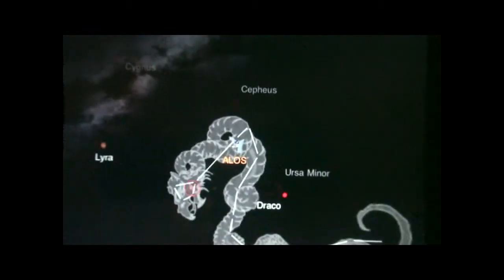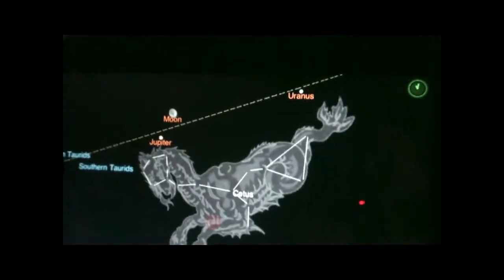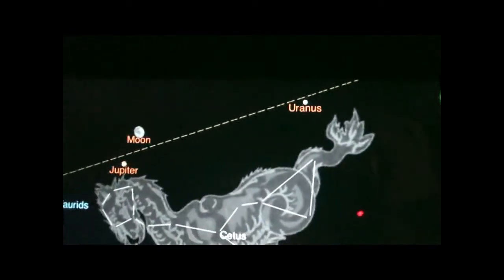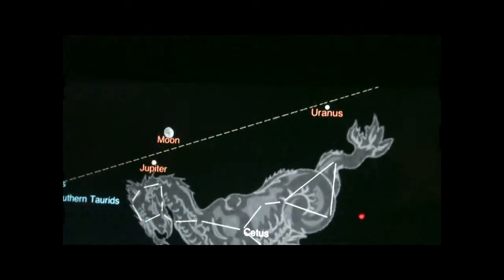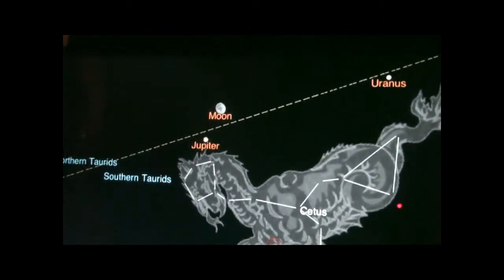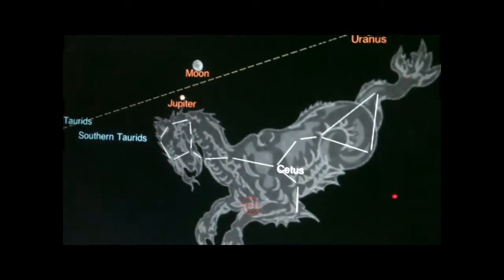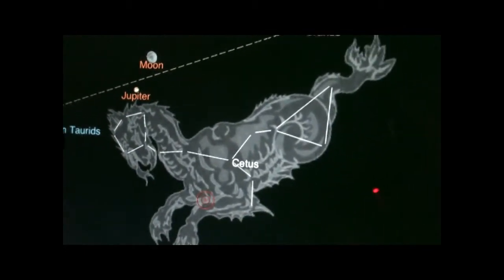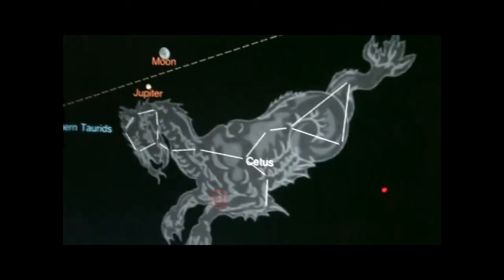If I span over I can start seeing other constellations, and over here I can actually see the moon. This one does say 'Moon.' The cool thing here is right below the moon I'm supposed to be seeing Jupiter, and then this is supposed to be the Cetus constellation.